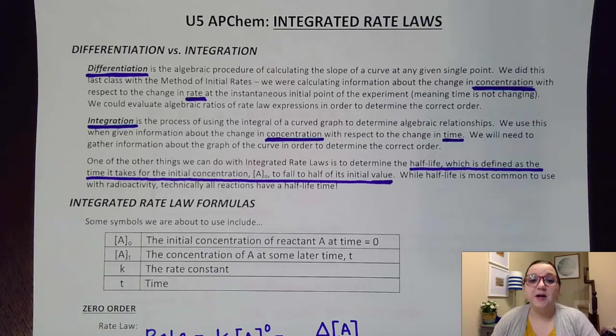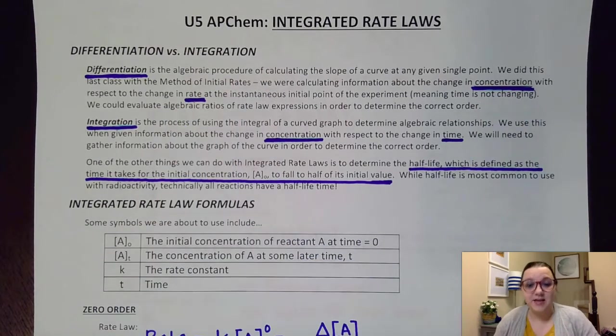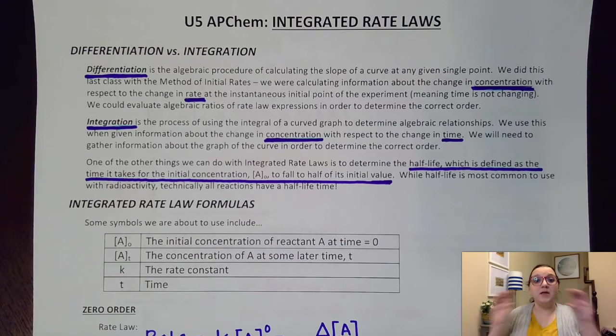Hey guys, Ms. Morisic here, and in this video we're going to talk about the formulas when solving integrated rate laws. In our last video we looked at differentiated rate laws, which is where we were given concentration and rate data for an experiment in a table. What we did was set one trial's rate law expression over another's, and by using algebra we could end up solving what our orders would be.